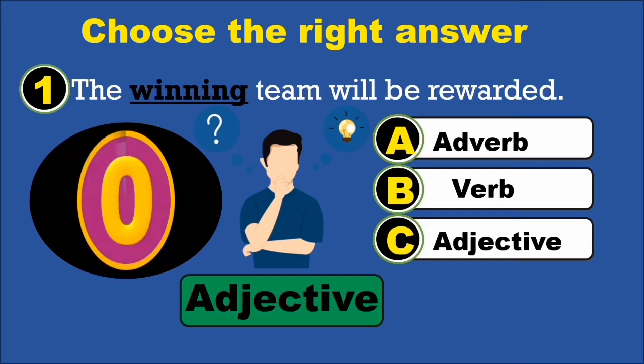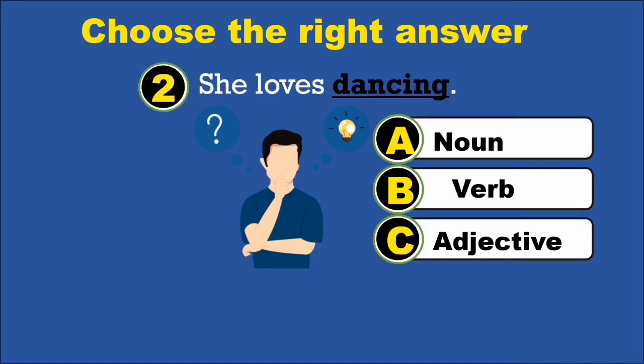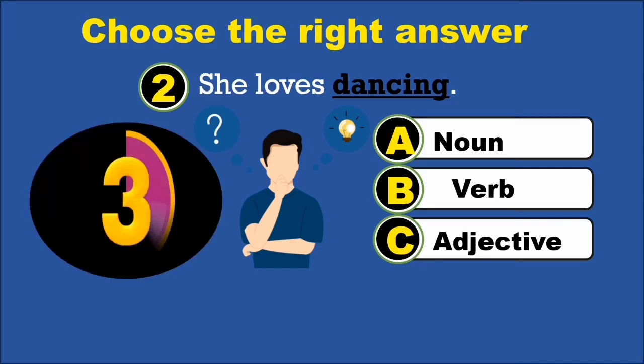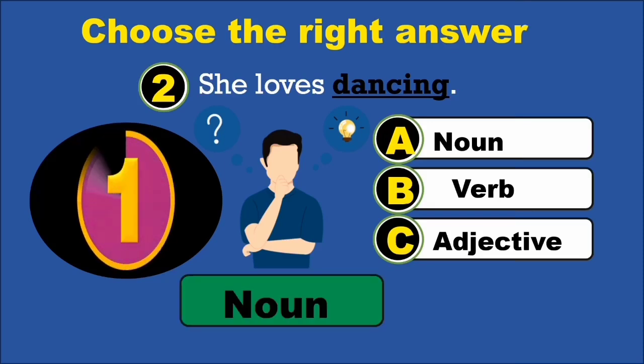The correct option is she loves dancing. The correct option is noun.